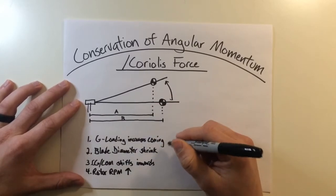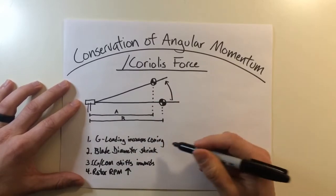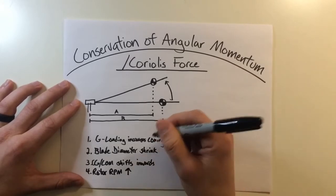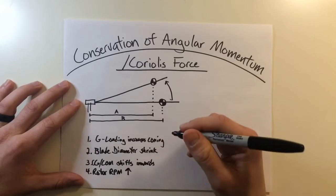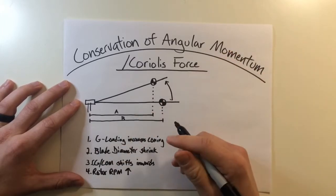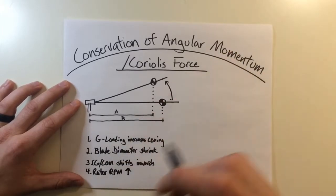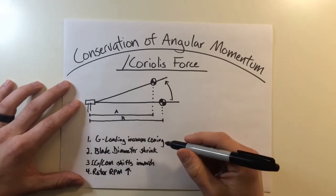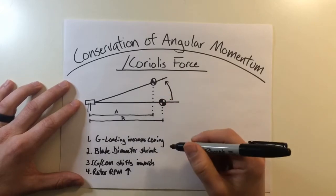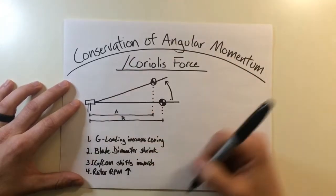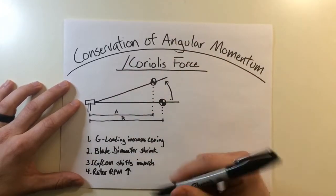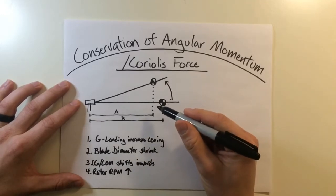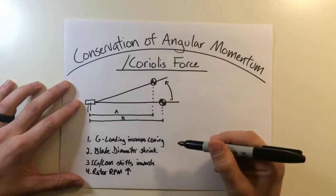Now the easiest analogy here to see this is imagine a figure skater spinning in circles. As the skater's arms come closer to her body, she tends to speed up, her RPMs increase. And as she extends her arms, the RPM or her rotational velocity begins to slow down. Both the figure skater and your rotor blades have angular momentum while spinning. They have that momentum in a rotational direction that they're trying to maintain. And when the center of gravity or the location of mass changes, that rotational velocity changes also.